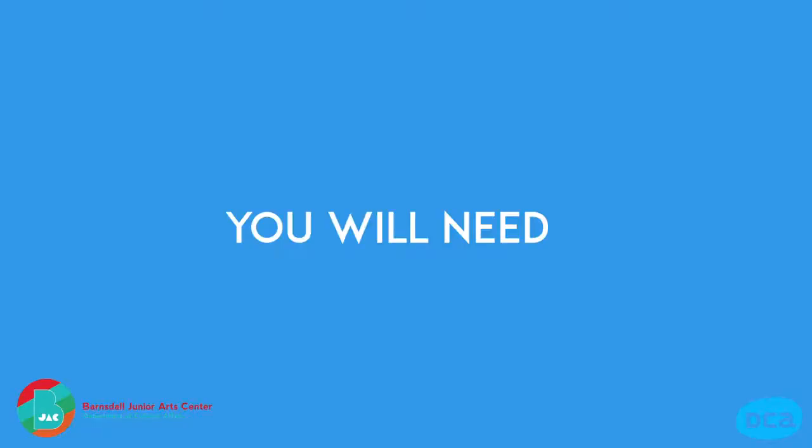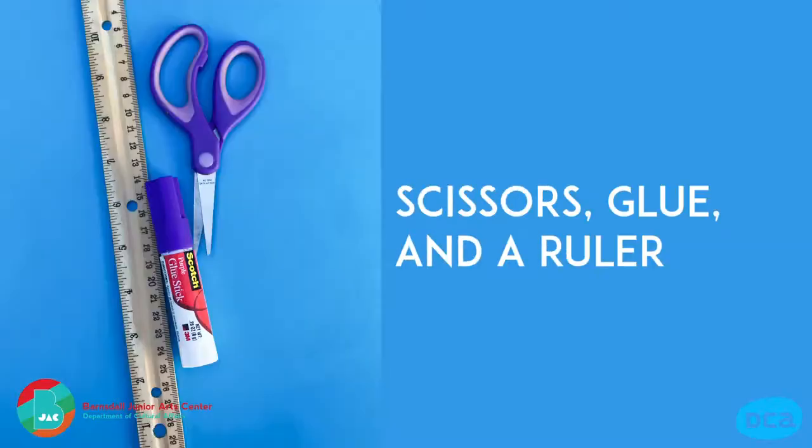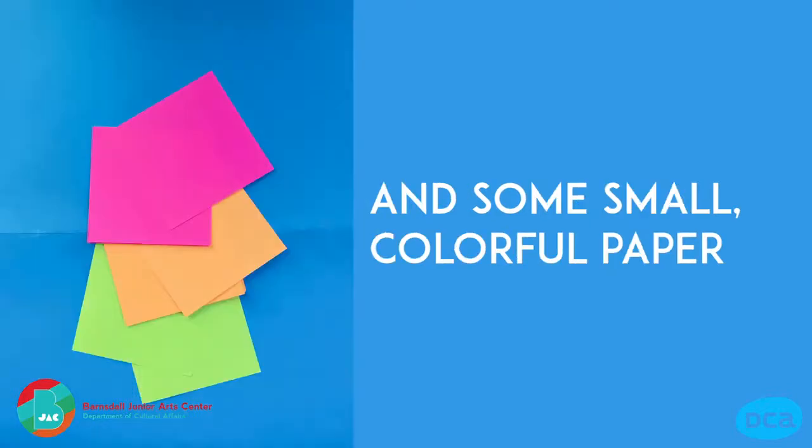How to make radial origami. You will need paper, scissors, glue, and a ruler, and some small, colorful paper.